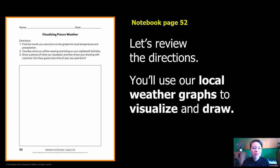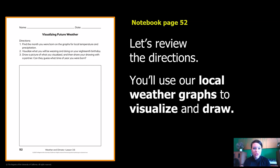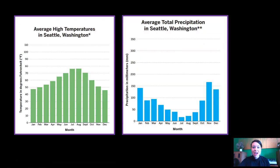We're going to use our local weather graphs to visualize and draw on page 52. I'm going to show you some weather graphs and you're going to find the month you were born on the graphs for local temperature and precipitation. Then visualize what you would be wearing and doing on your 18th birthday, draw a picture, and share your drawing with a partner — or someone at your house. I'm going to model this for you first.